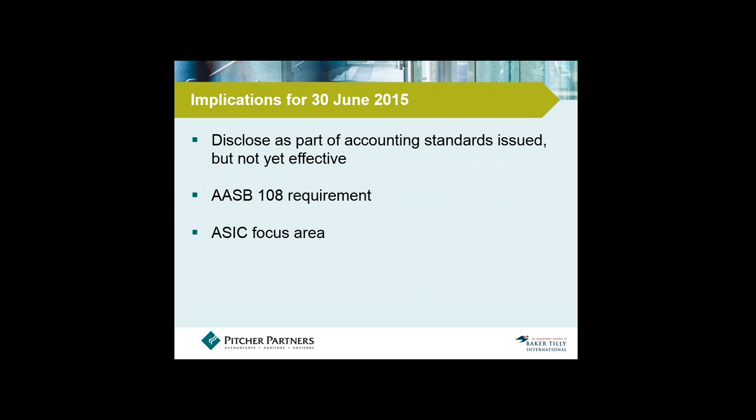The effective date of AASB 15 is annual periods beginning on or after 1 January 2017 — meaning 30 June 2018 — but internationally it has been deferred to 1 January 2018, meaning 30 June 2019 for Australian entities. For 30 June 2015 purposes, AASB 15 must be disclosed as an issued but not yet effective standard per AASB 108, and it is also an ASIC focus area.